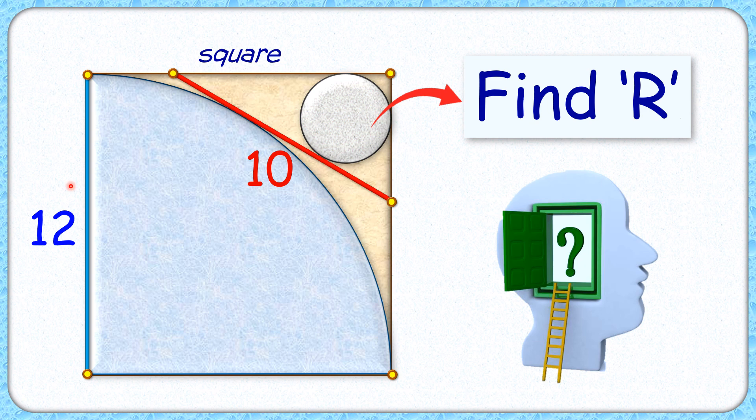In this interesting question we have a quadrant and a circle inside a square with side length 12 centimeters. This red line segment is tangent to both the circle and the quadrant with length 10 centimeters. The exciting part is with this limited data we have to find the radius of the circle.